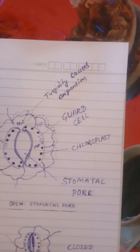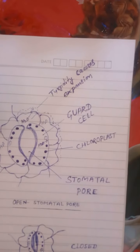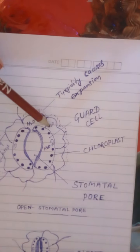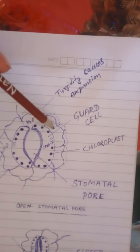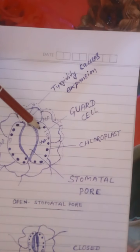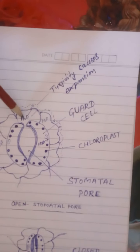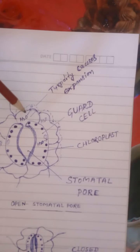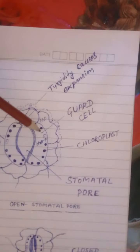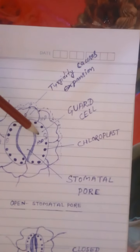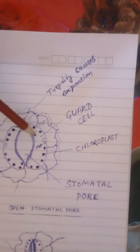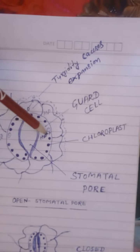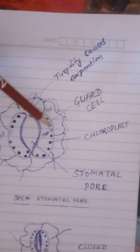When water reaches the stomatal aperture, it starts to fill in the subsidiary cells. The subsidiary cell surrounding the guard cell is filled by excess water. This water is not retained there but gets diffused inside the guard cell, and this excess water applies pressure over the wall of the guard cell.